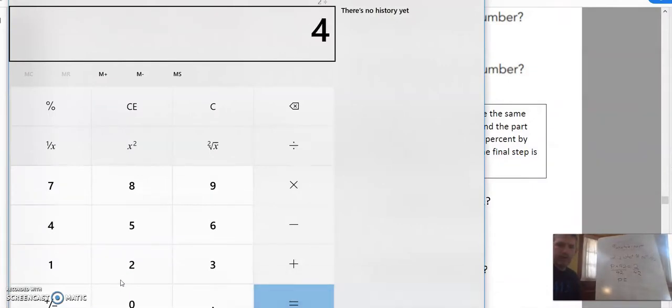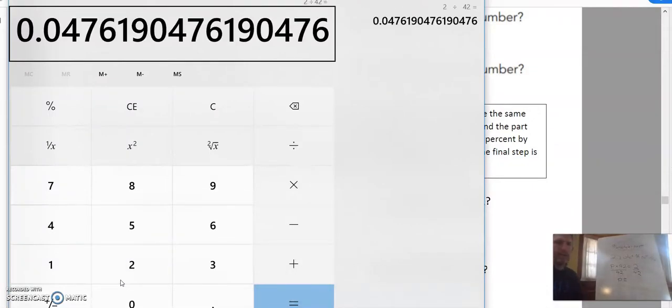2 divided by 42. And I get this crazy looking thing. Wowzers. Well, what do we do with that? Well, we're not going to round it very far. Maybe that far.